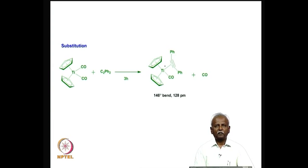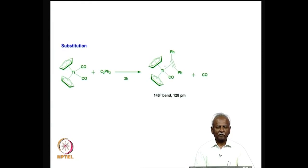Here I have pictured a substitution reaction involving carbon monoxide. It is easy to replace a carbon monoxide with a poorer pi acceptor ligand, because the carbon monoxide that remains on the metal would like to enhance its pi acceptor property. The extra electron density now on the metal is pumped into the pi star orbitals of carbon monoxide.